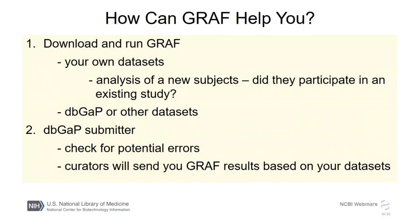One of the main questions is how this will help you. You can download the graph software and run it locally on your own data sets, on dbGaP data, or other data. One possible use case: in addition to picking out errors in your data, you can answer questions like whether subjects you want to add to a new project have been represented in other studies. Another good use is if you're submitting data to dbGaP — the curators can send you a URL based on the CGI that Jimmy and others at dbGaP developed, showing you plots so you can check the data before it's finalized.